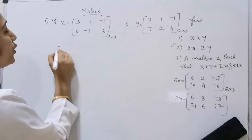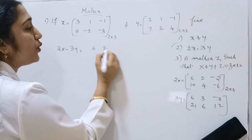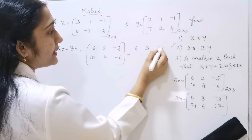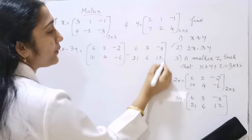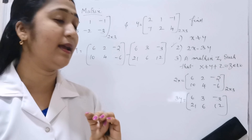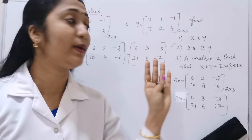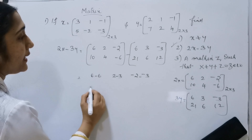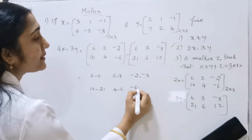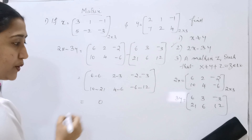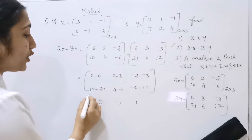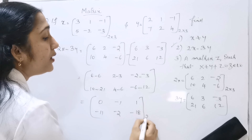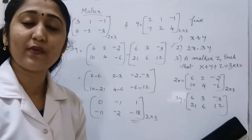Now we have to subtract: 2X minus 3Y. So we set up [6, 2, -2; 10, -4, -6] minus [6, 3, -3; 21, 6, 12]. First we do the scalar multiplication of 2X, then scalar multiplication of 3Y, and then subtract. So: 6 minus 6 is 0, 2 minus 3 is minus 1, minus 2 minus minus 3 is plus 1. Then 10 minus 21 is minus 11, minus 4 minus 6 is minus 2, and minus 6 minus 12 is minus 18. So 2X minus 3Y equals the 2 by 3 matrix [0, -1, 1; -11, -2, -18].